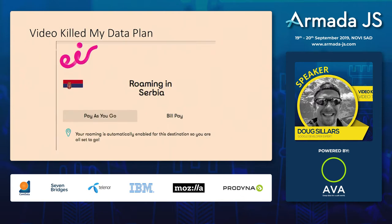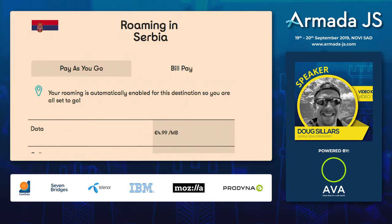The subtitle of my talk is 'Video Killed My Data Plan.' I'm living in Ireland right now and I have a SIM from a carrier called Eir. I wondered how much it would cost coming here to Serbia — roaming is automatically enabled and you're set to go, as long as you're willing to pay five euros a megabyte. In Russia it's 10 euros 24 cents a megabyte. We can use these as indicators of how expensive video can be while roaming — and there are always edge cases when people visit our websites.